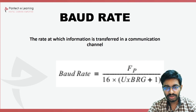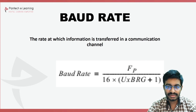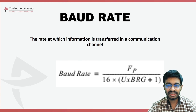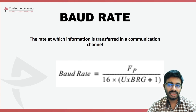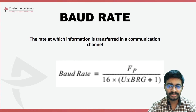Baud rate deals with communicating between two different devices. If you are using 9600, this much amount of data will be transmitted. If you are using 115200, this much amount of data will be transmitted.